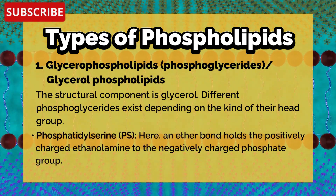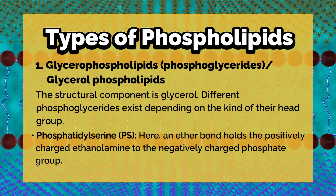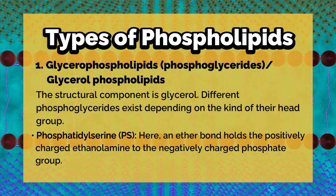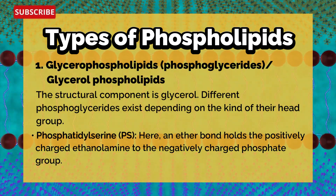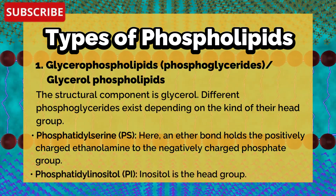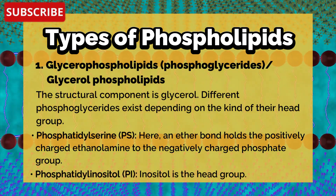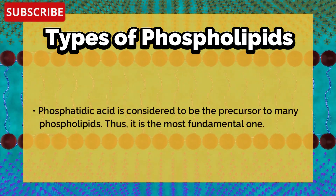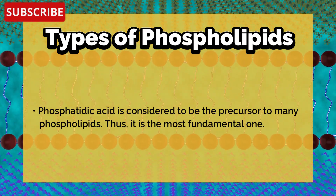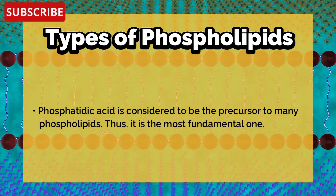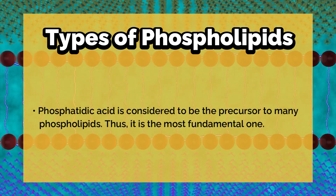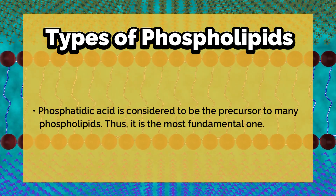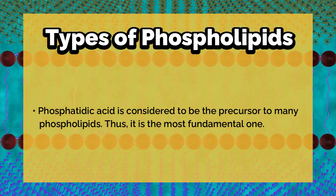Phosphatidylethanolamine has an ether bond that holds the positively charged ethanolamine to the negatively charged phosphate group. Phosphatidylinositol has inositol as the head group. When the phosphate group is bonded to other head molecules such as hydrogen and ethanolamine, it is known as phosphatidic acid and phosphatidylethanolamine.